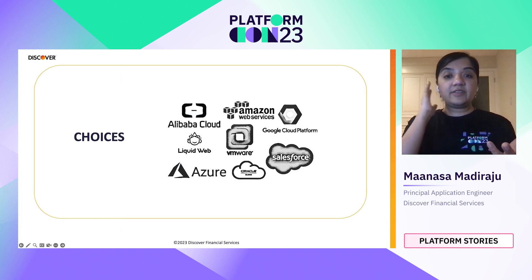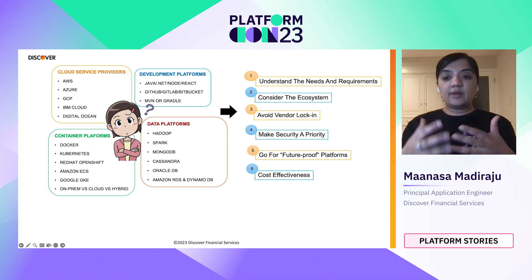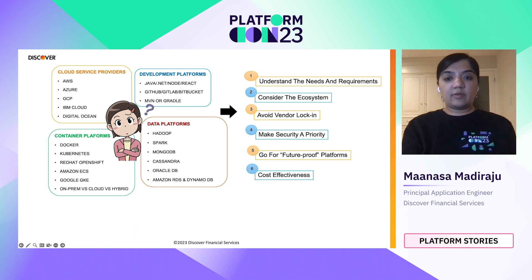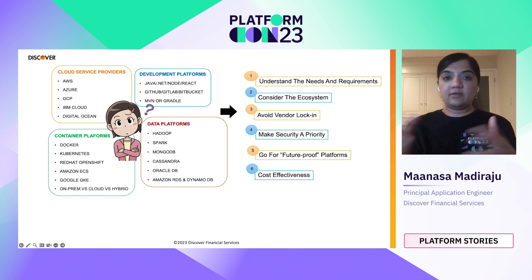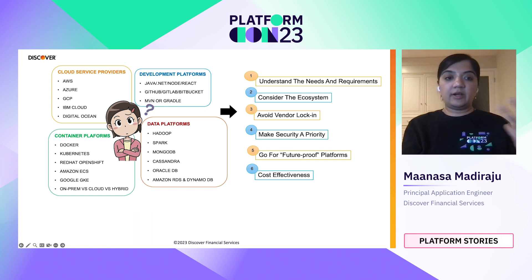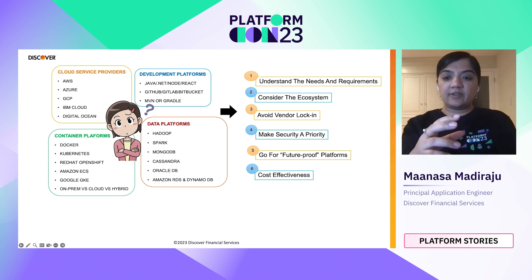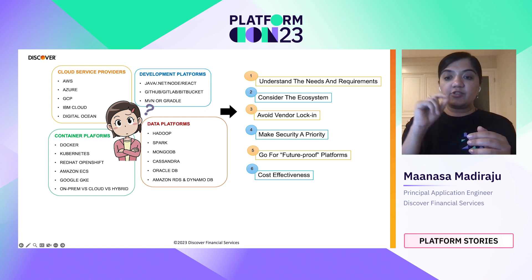The next topic is choices — how do we decide, where do we start? When it comes to platform choices, there are several options to consider depending on your use case. For cloud-based platforms you have AWS, Azure, GCP; container platforms include Docker and Kubernetes; development platforms involve application services written in different languages and version control systems; and data platforms include Hadoop, Spark, Cassandra, Oracle DB, and RDS. The choice of platform should depend on your specific needs and requirements, budget, team expertise, and strategic goals — but extreme care should be taken not to build platforms by stitching immature technologies together, as that is the biggest mistake one can make.